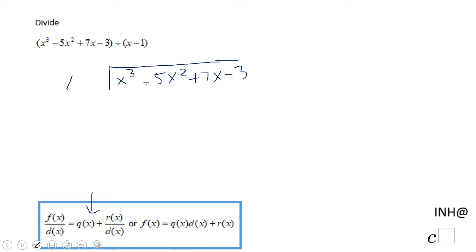And divide by x minus 1. So what should I multiply x to get x cubed? That will be x squared. x squared times x is x cubed, x squared times 1 is x squared, but don't forget it's minus x squared.